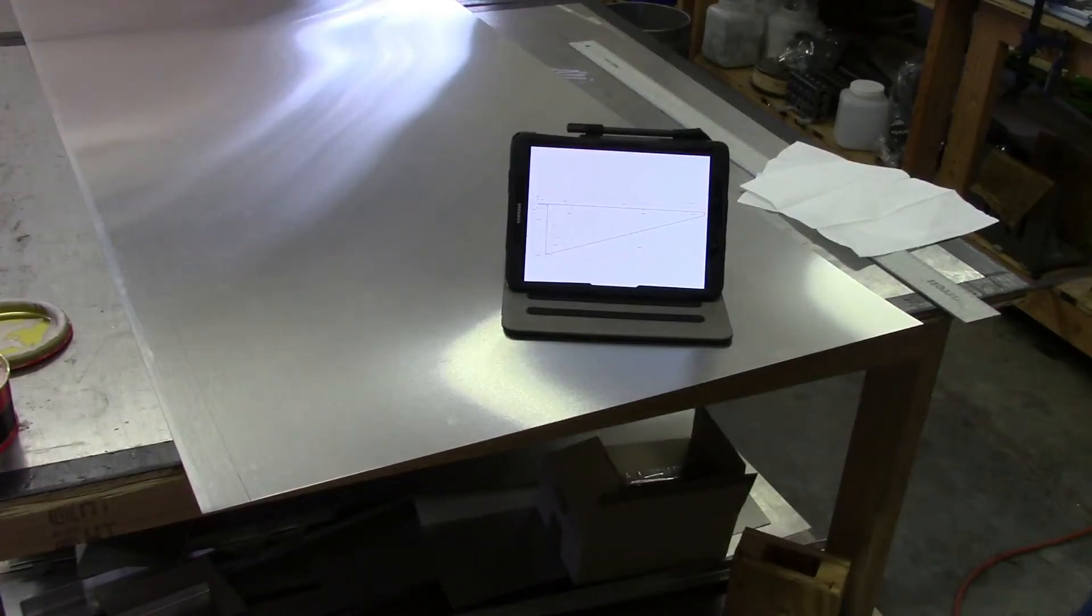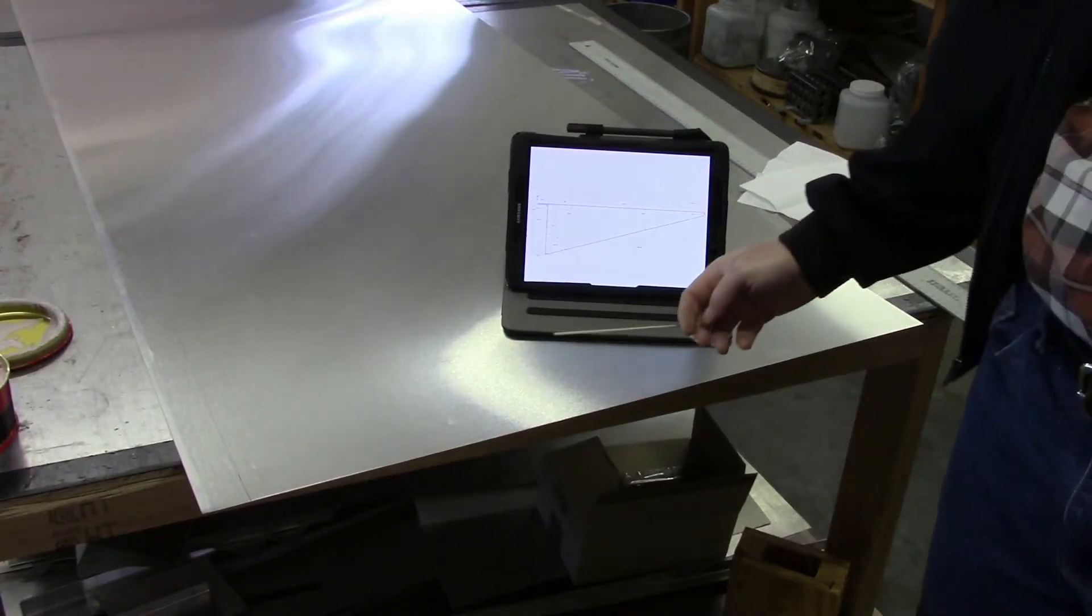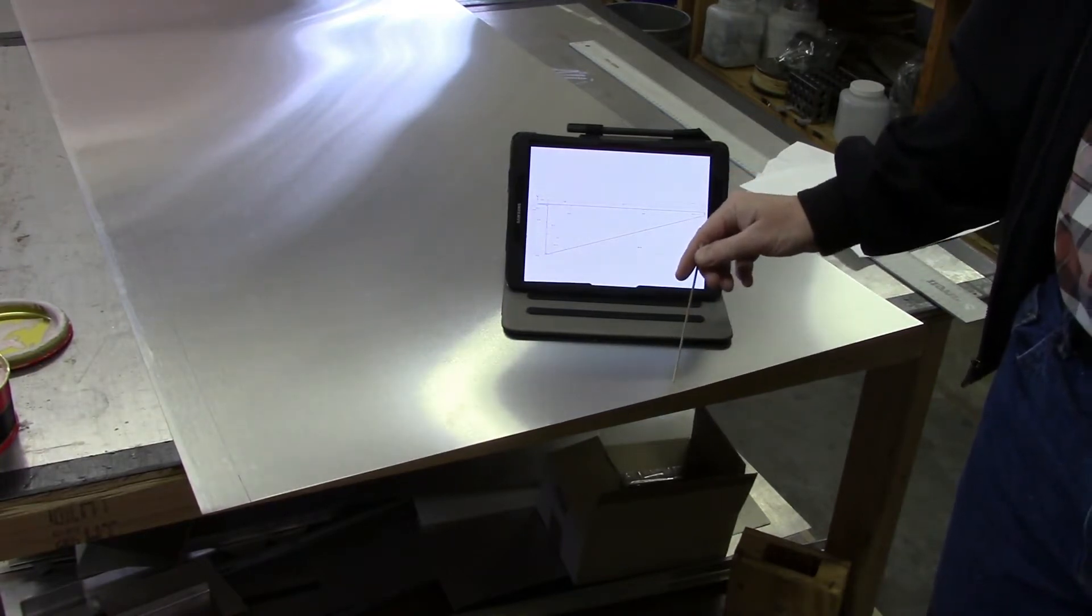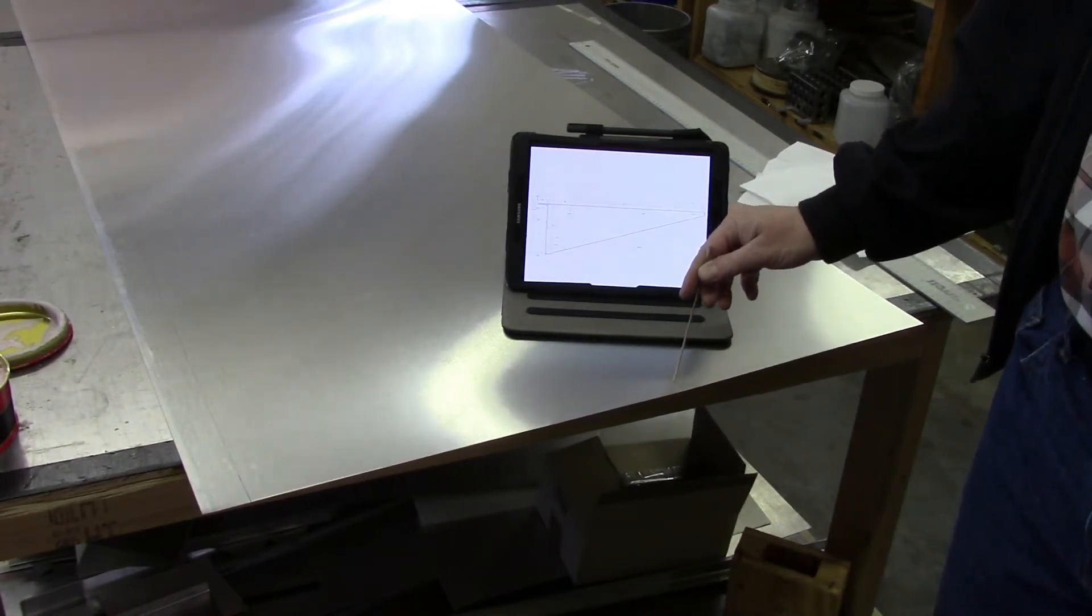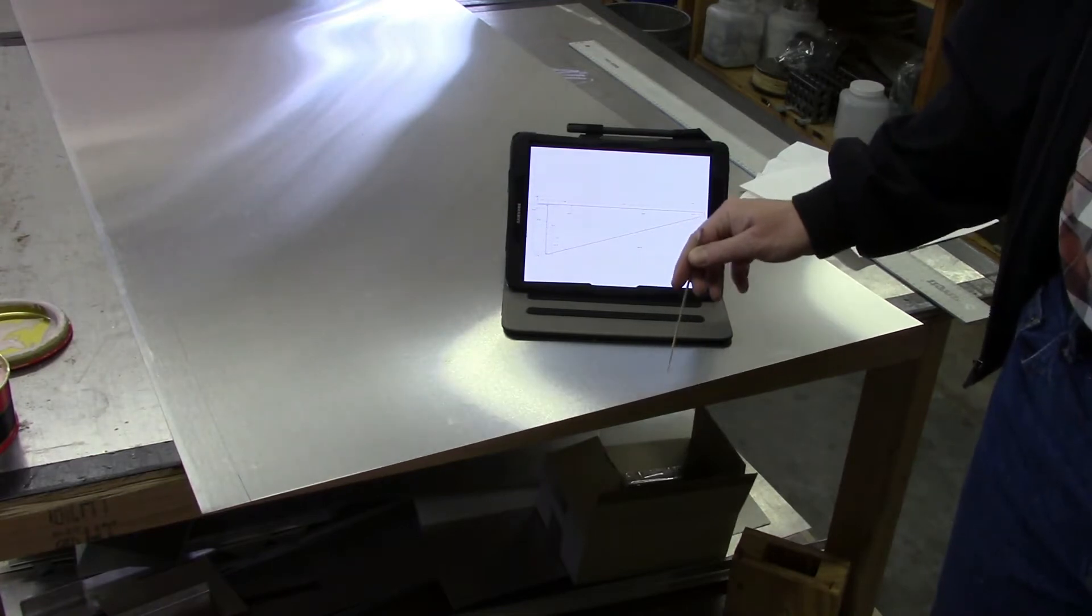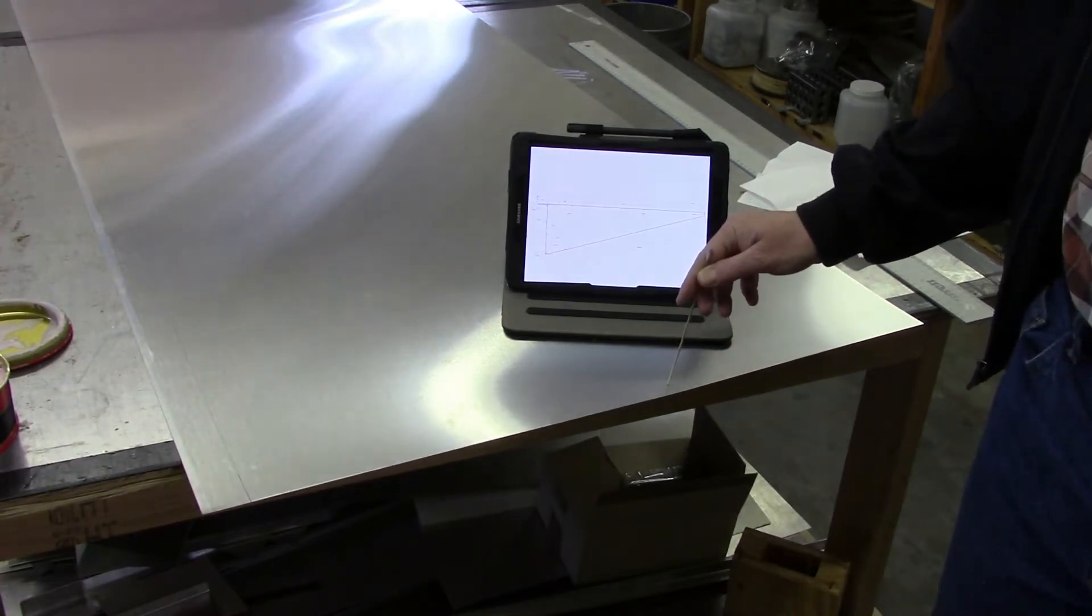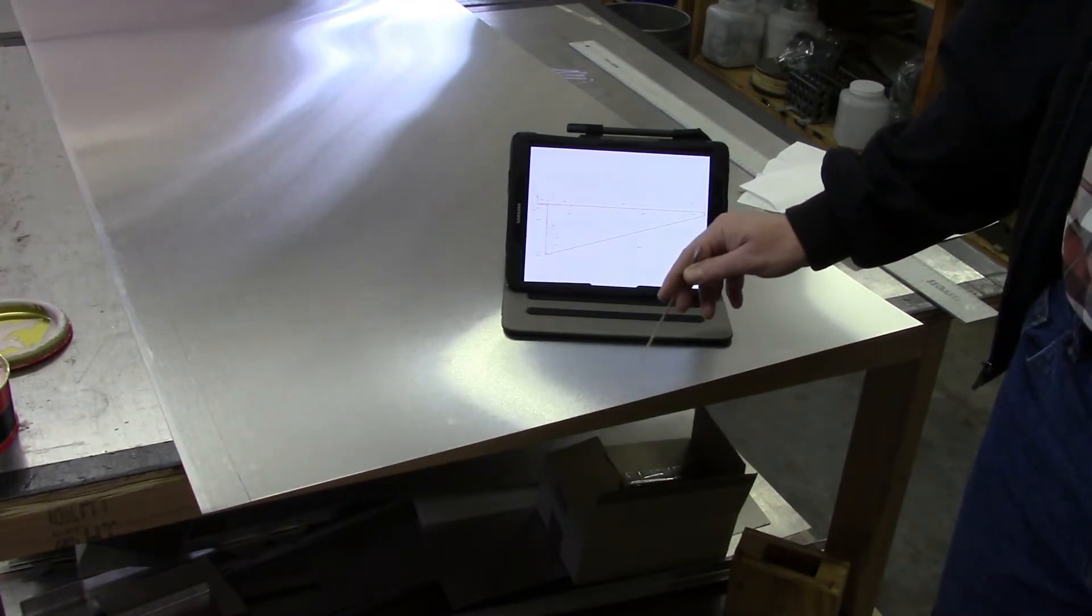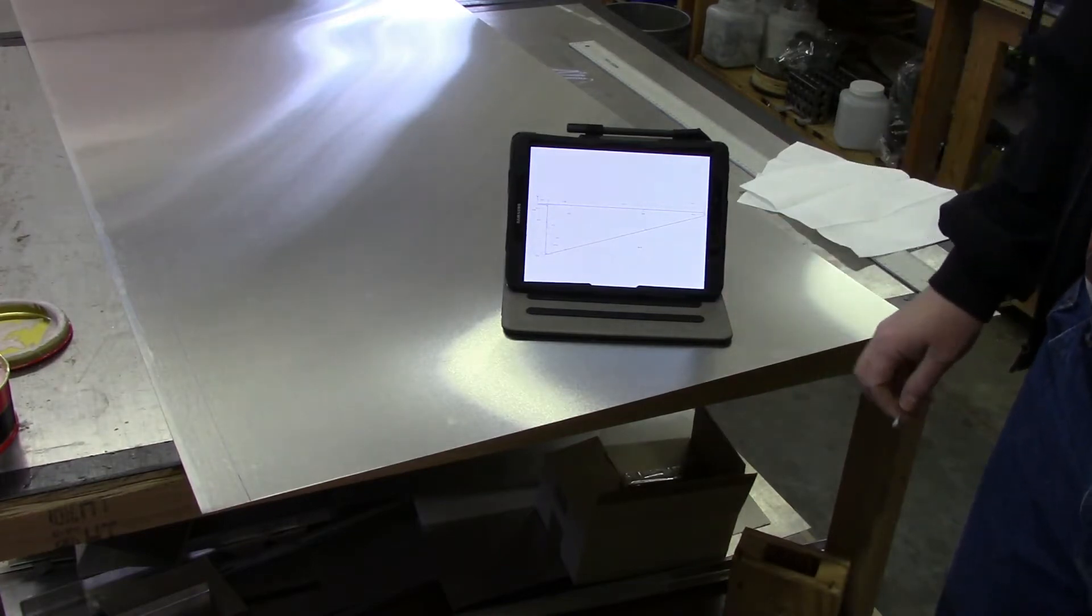Today I'm going to be bending the aileron skin, which is currently flipped over. The most special feature about the aileron skin is that it's 016 aluminum. You definitely have to be very careful when handling it because 016 is basically four thicknesses of a sheet of paper, and it doesn't take much to damage the skin or make it unusable.